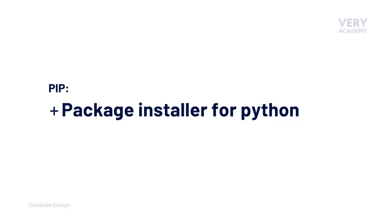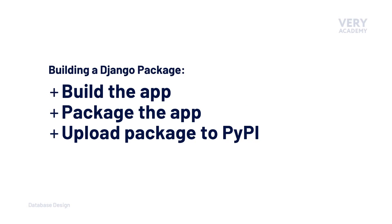As we have already seen in this course, we manage packages from the Python Package Index using pip, the default Python package manager. There are other managers you can use, but pip is the default when you install Python on your machine. The general process for building a Django or any Python package is: first, build the actual app you want to distribute, and second, package that app up in a way that can be distributed to the Python Package Index and downloaded via pip or any other package manager.